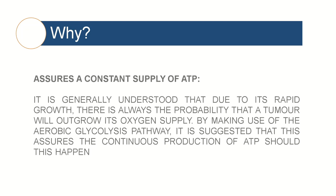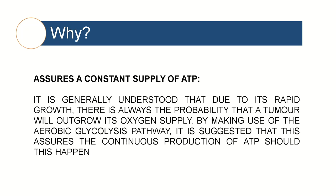The second explanation is that by using glycolysis rather than oxidative phosphorylation, the cancer cell ensures that it has a constant supply of ATP. It is generally understood that due to its rapid growth, there is always the probability that a tumor will outgrow its oxygen supply. By making use of glycolysis, it is suggested that this assures continuous production of ATP should this happen to the cell.